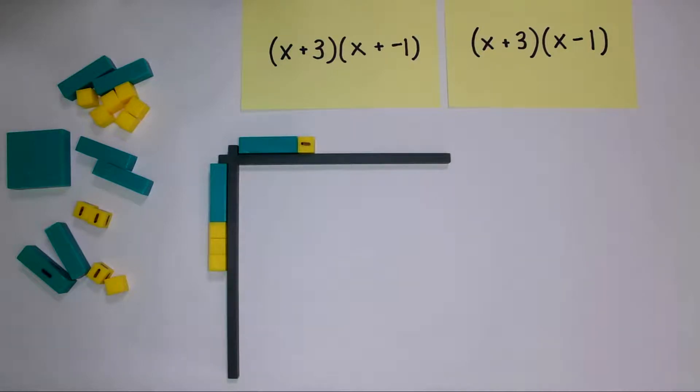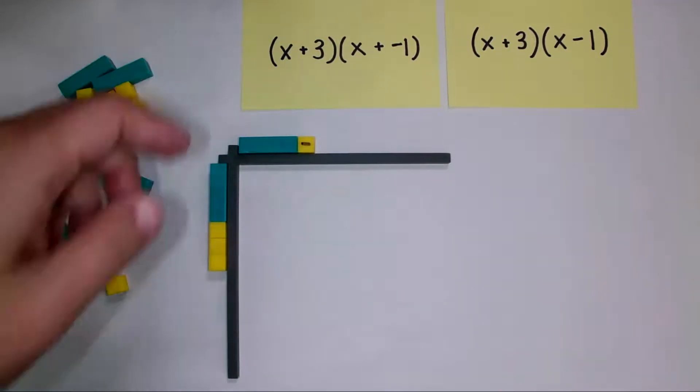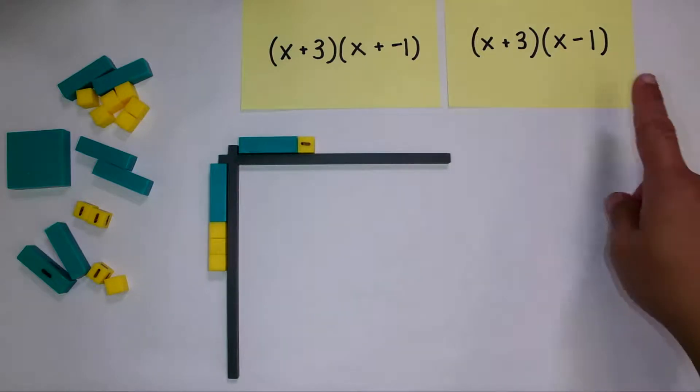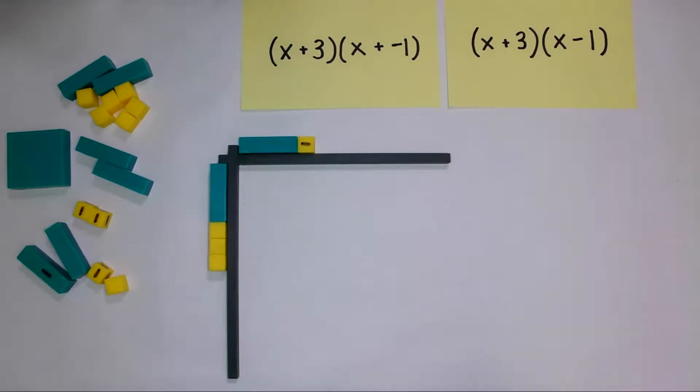So now let's go ahead and multiply these expressions. We've written this expression here x plus 3 times x plus a negative 1, but it might also make sense to students to write it as x plus 3 times x minus 1. Both are correct and that would be a great opportunity for you to talk to students about why those mean the same things.